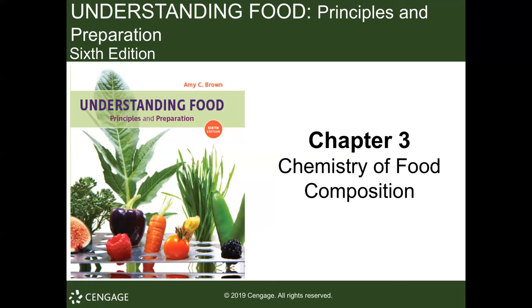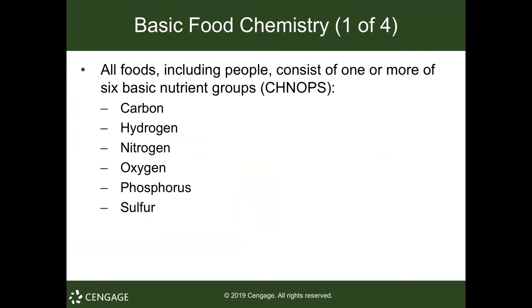Hi everyone, today we're going to be talking about the chemistry of food composition. All basic foods and people and more or less everything that's alive on this planet consist of these six basic nutrient groups — really what I'm talking about here are the elements: carbon, hydrogen, nitrogen, oxygen, phosphorus, and sulfur.